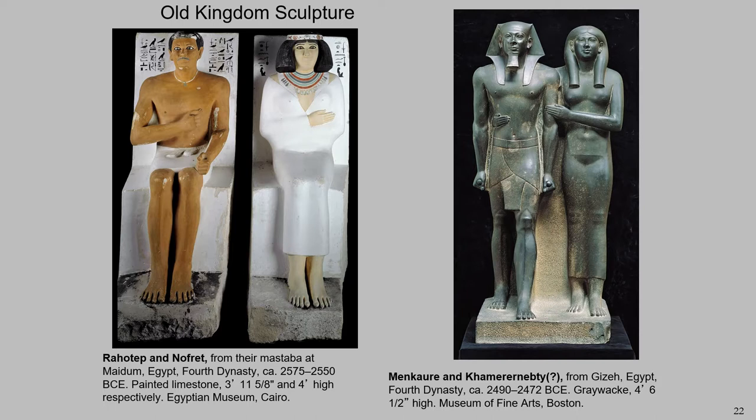We see their hands over their heart. The heart was central to the Egyptian belief of the soul — that is where it resided, and it was preserved in the body, in the mummy. So we see this hand over the heart symbolizing the importance of that.